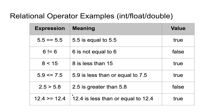Let us look at some examples of these relational operators. These examples will be of integers, floats, and doubles. The first example is the expression 5.5 is equal to 5.5, which is a true expression.